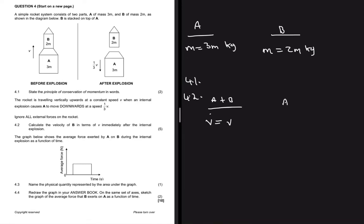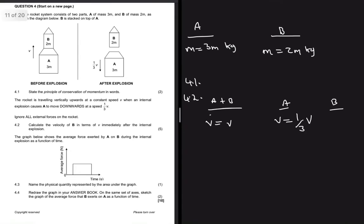For B, we don't know what's going on. The question says ignore all external forces on the rocket and calculate the velocity of B in terms of v immediately after the internal explosion. This is our scenario.